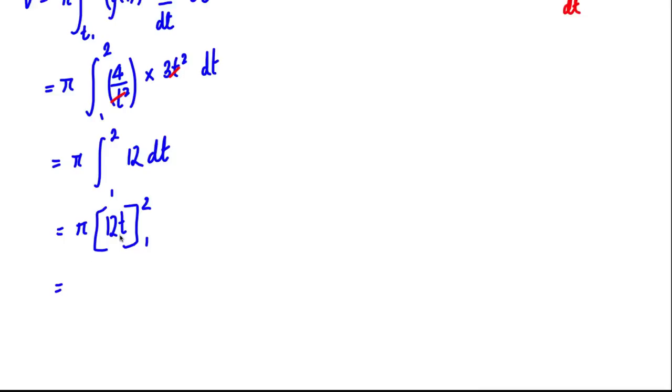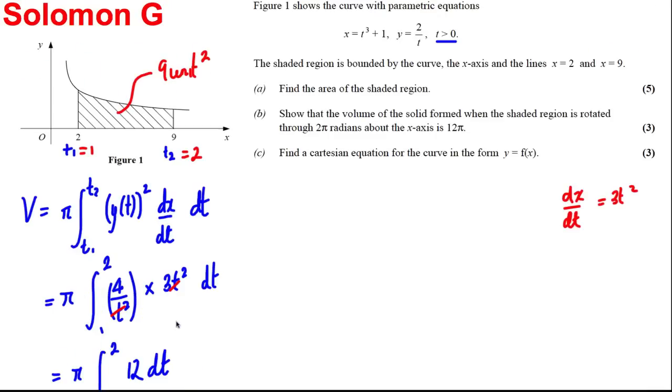And we substitute in 2 and we substitute in 1, so we're going to have 24, take away 12, which is 12, and 12 times pi is 12 pi units cubed. And in the question, we were asked to show it was 12 pi units cubed, and we're done. Okay, we're going to rub this out now and do the last part.